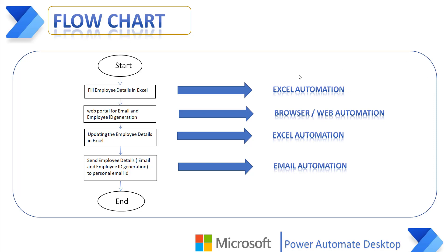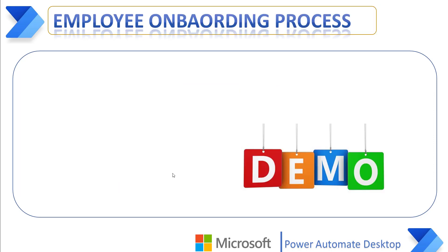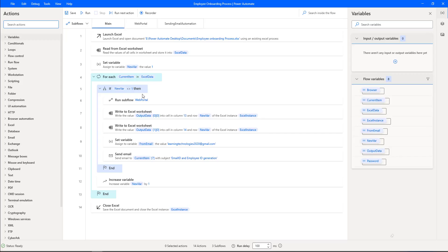These are all the steps — the manual steps — that we are going to automate to reduce efforts in the employee onboarding process using RPA. We will use Excel automation, browser/web automation, and email automation in Power Automate Desktop. Before creating the desktop flow, let me show you a small demo of the employee onboarding process project using Power Automate Desktop.